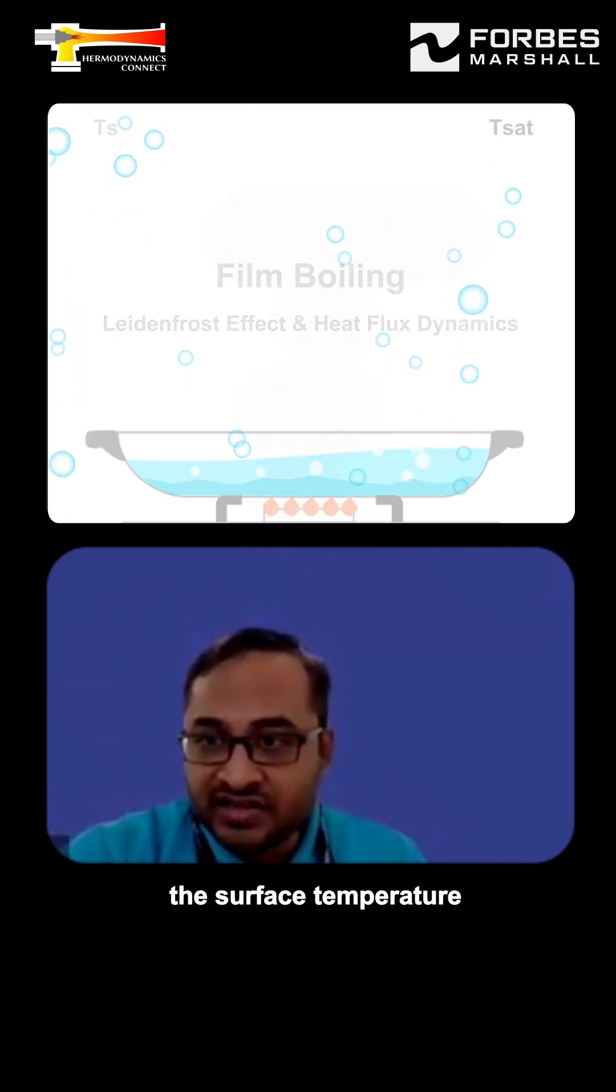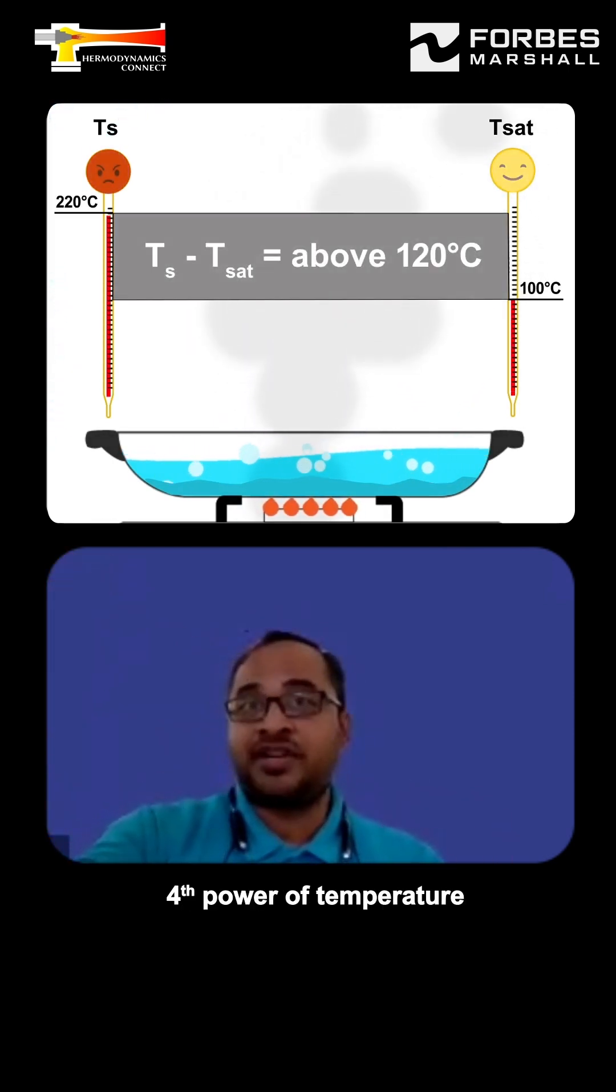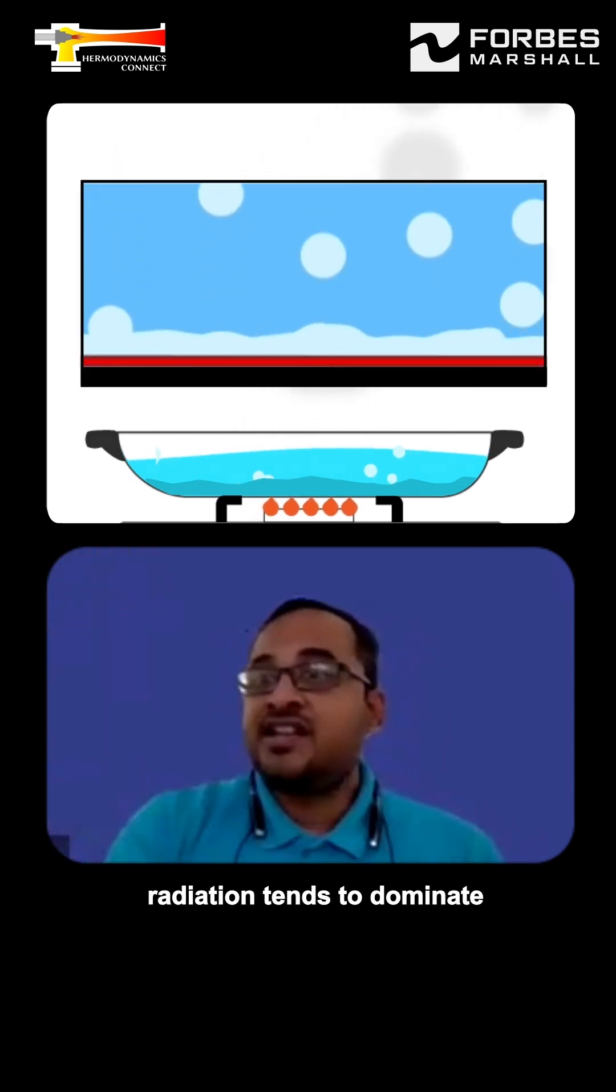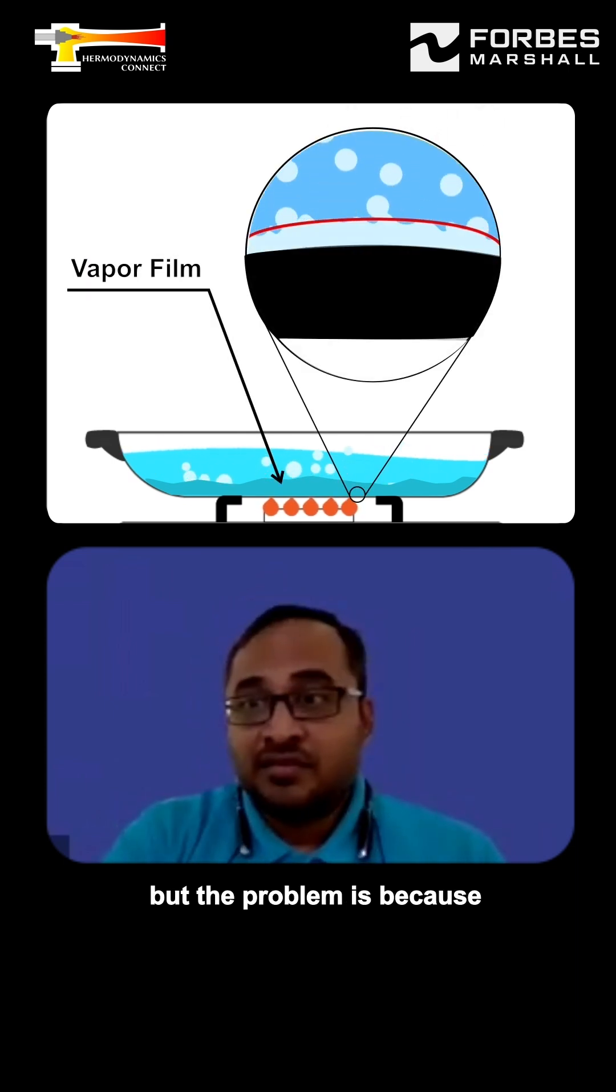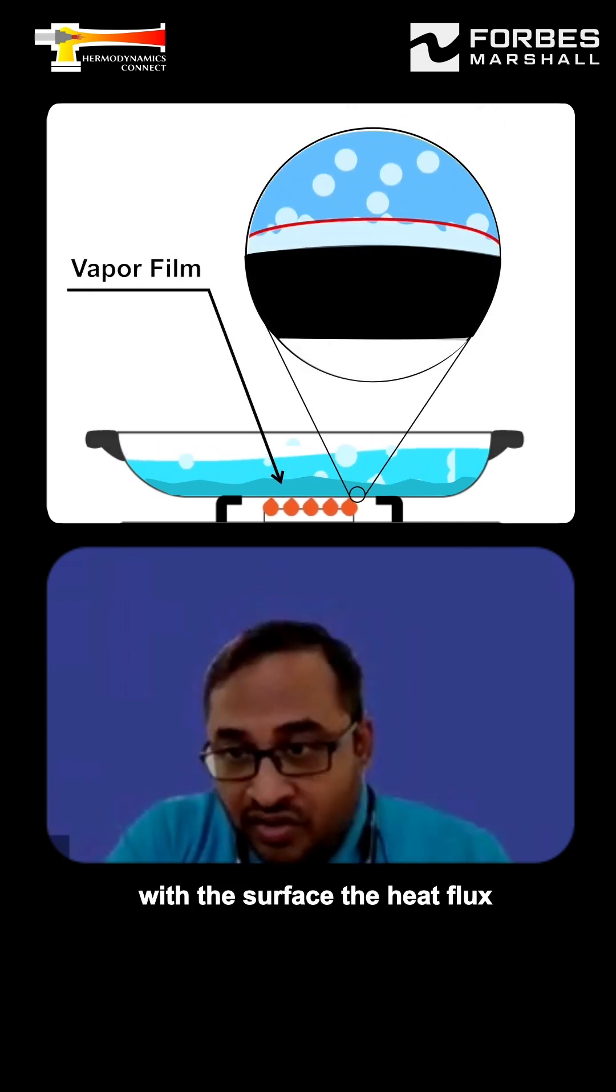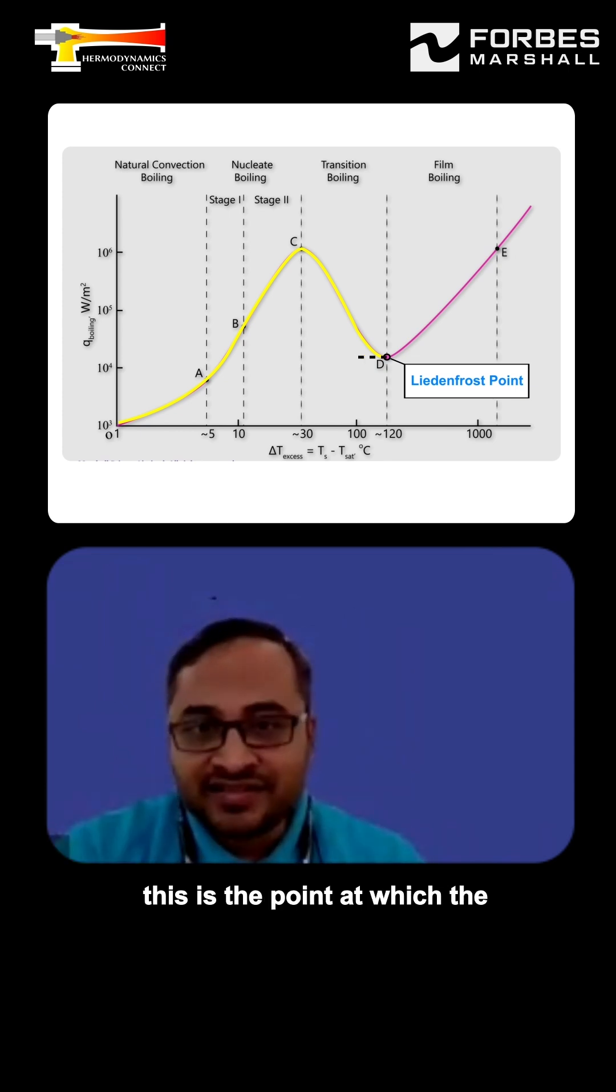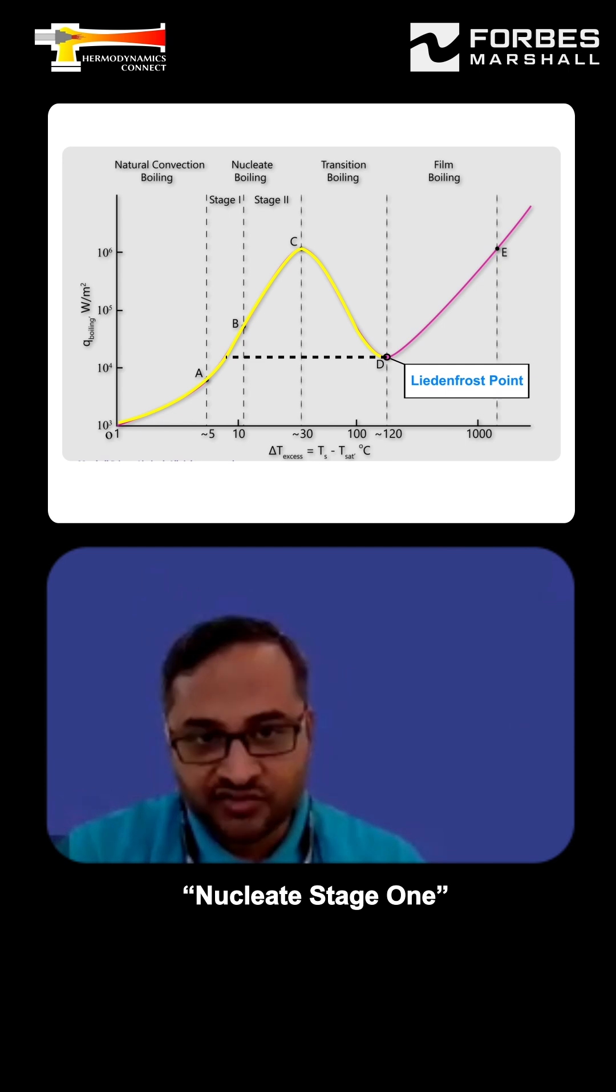In film boiling, the surface temperature is so high that your heat transfer is fourth power of temperature in case of radiation. So if your temperature goes up, radiation tends to dominate in this particular condition. But the problem is, because no liquid is directly in contact with the surface, the heat flux is lowest when film boiling starts. That's called the Leiden-Frost point. This is the point at which the heat flux is similar to nuclear stage 1.